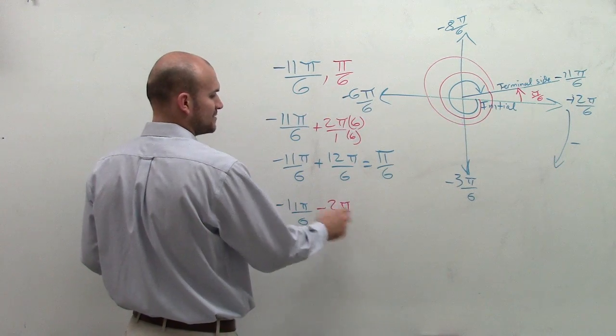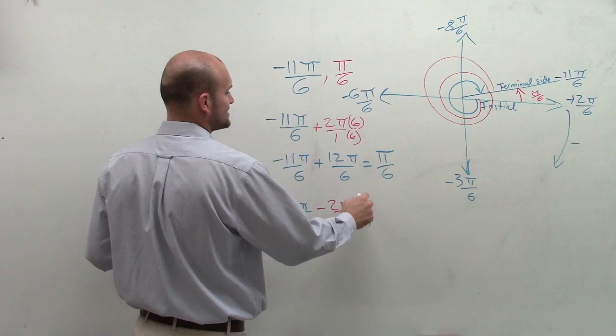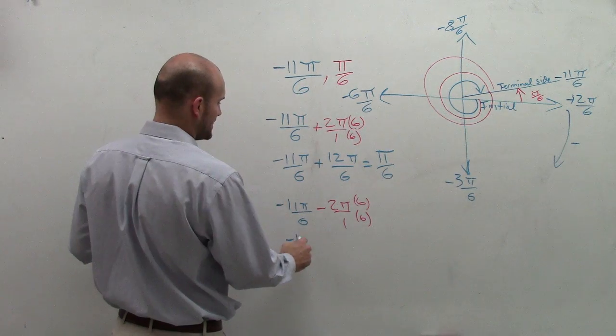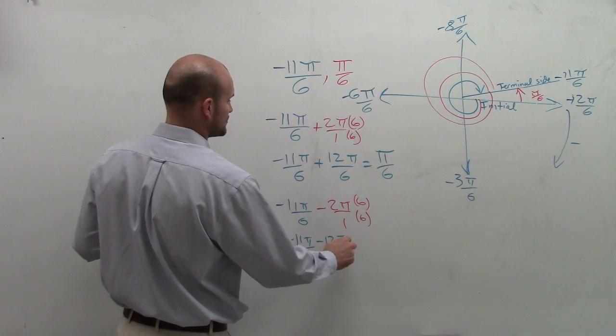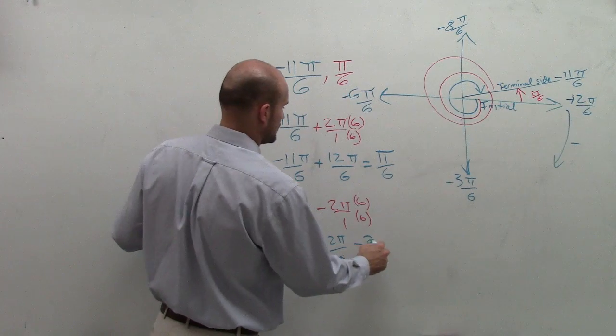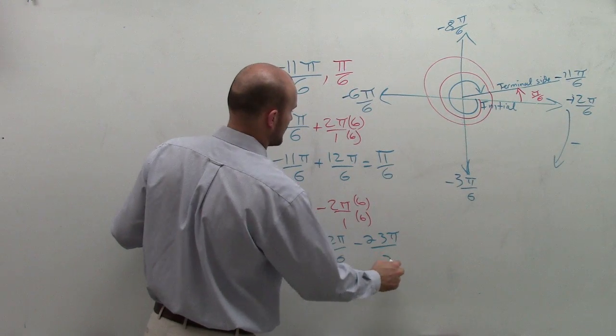And again, we do the same thing. Put it over 1, multiply by 6 over 6. So I get negative 11 pi over 6 minus 12 pi over 6. And you get a negative 23 pi over 6.